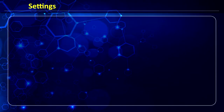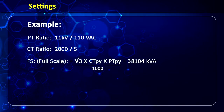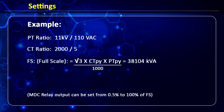For this video we will use a PT ratio of 11 kV by 110 and a CT ratio of 2000/5. In the internal algorithm of the meter, the full scale value is calculated as root 3 of CT primary multiplied by PT primary, divided by 1000. This is the maximum value at which the MD controller can be programmed, and relay outputs can be set from 0.5% to 100% of full scale.